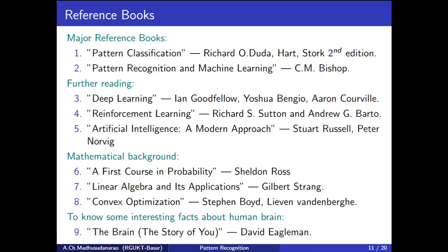These are the major reference books we are going to follow for our Pattern Recognition course. The primary reference book is Pattern Classification by Duda and Hart, second edition — this is the book we are going to follow throughout our course. The second major reference book is Pattern Recognition and Machine Learning by Christopher M. Bishop.